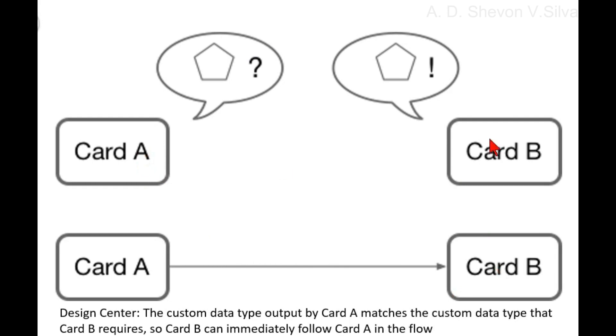Here you can see card A and card B. This depicts the data types, and here card A is connected to card B.